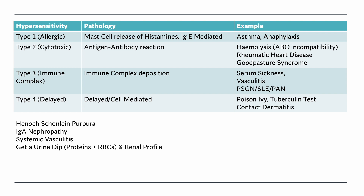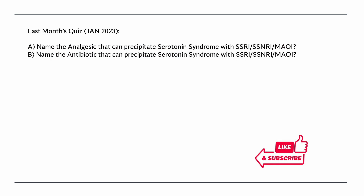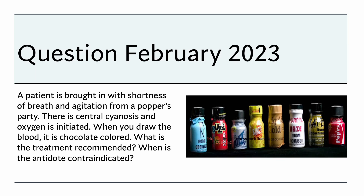Before we move on, let's answer last month's question: name the analgesic and the antibiotic that can precipitate serotonin syndrome with SSRIs, SNRIs, or MAO inhibitors. The analgesic is tramadol — many of you got it right — and the antibiotic is linezolid.